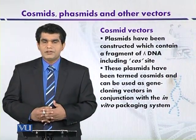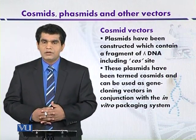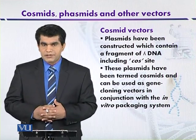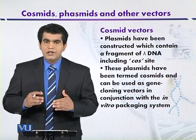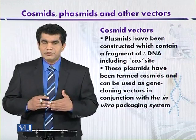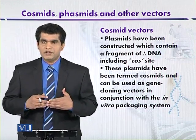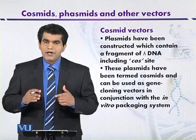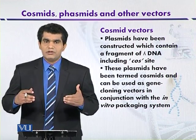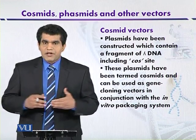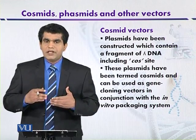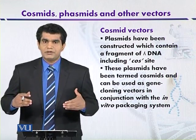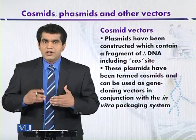Cosmids, phasmids and other advanced vectors. Cosmids are hybrid plasmids that contain the cos site from the lambda phage. The cos site consists of 12 nucleotide unpaired bases at the 5' end of the lambda genome. When the lambda genome inserts its DNA into the host organism by using these cos sites, it can assume the circular form. So cosmid vectors are plasmids that contain these cos sites from the lambda phage, which is why these hybrid plasmids are called cosmids.